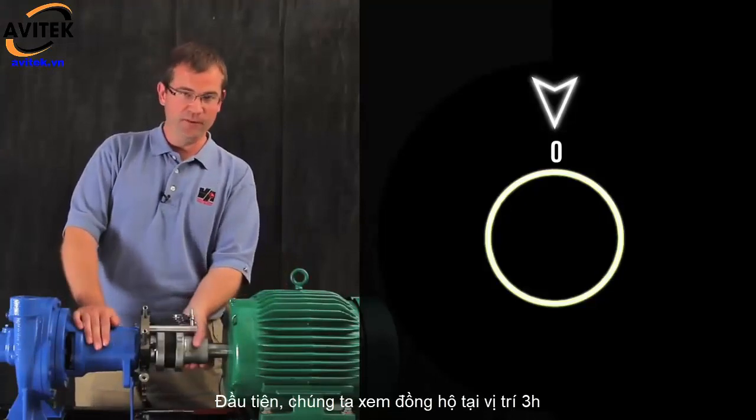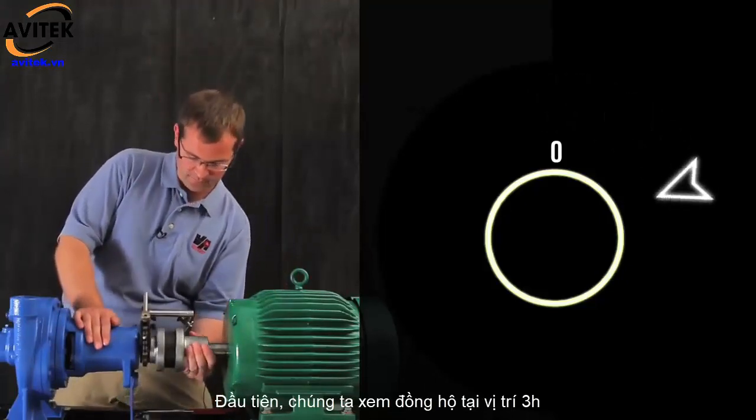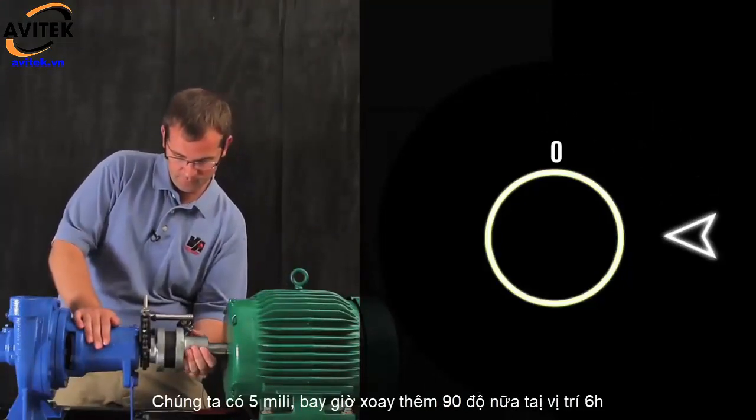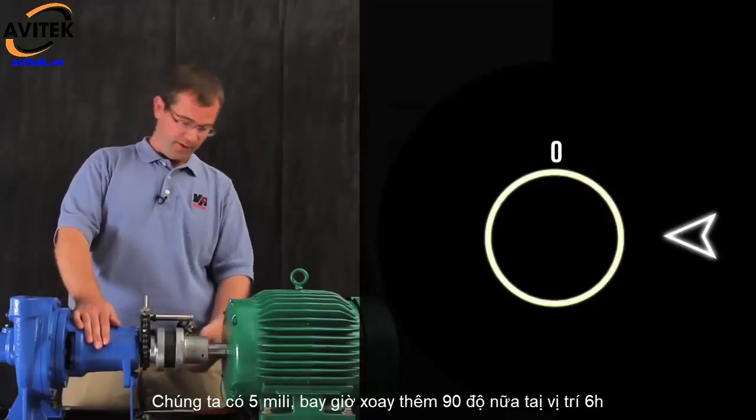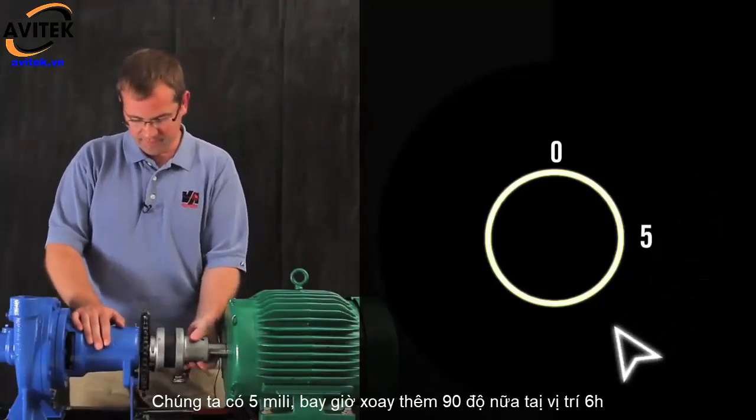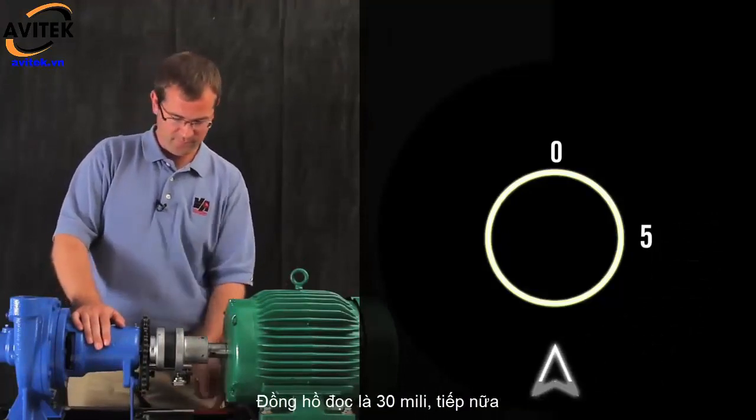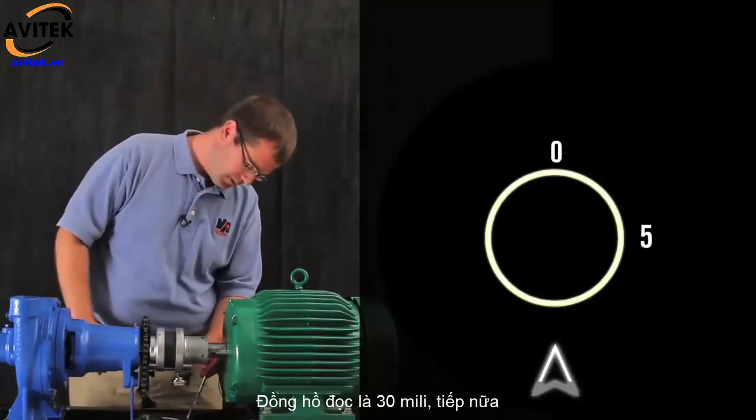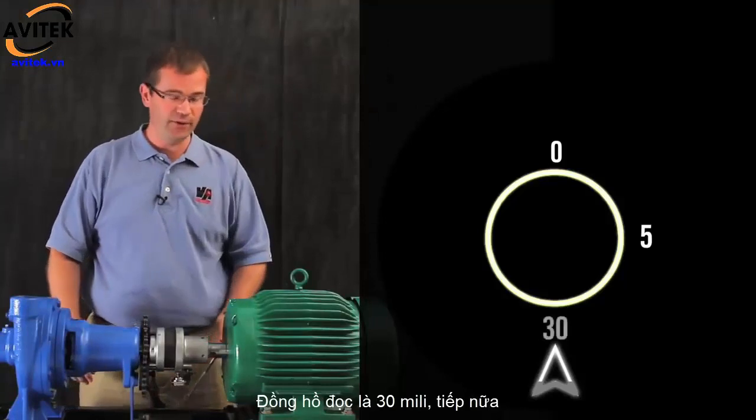So first, let's get a reading at 3 o'clock. There, we have 5 mils. Now another 90 degrees down to 6 o'clock, and that value is 30 mils.